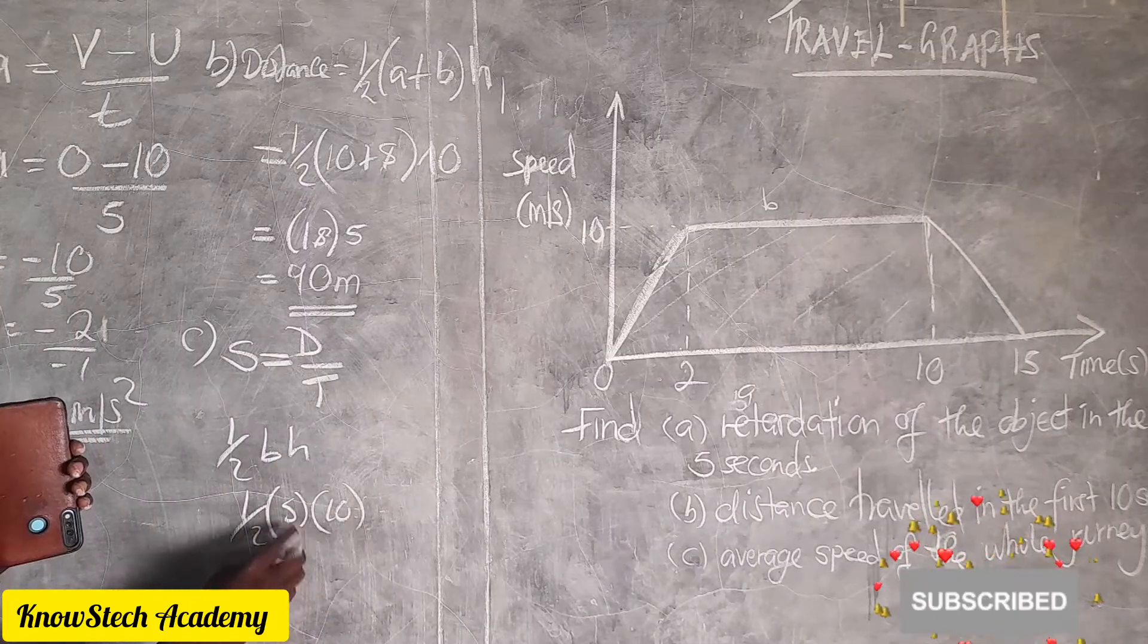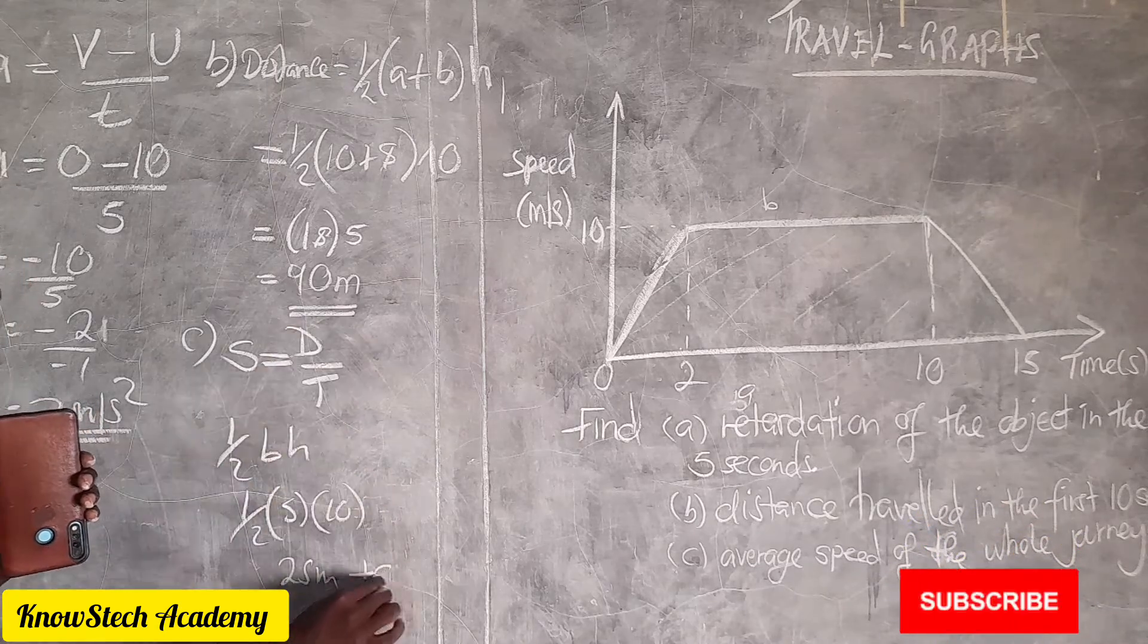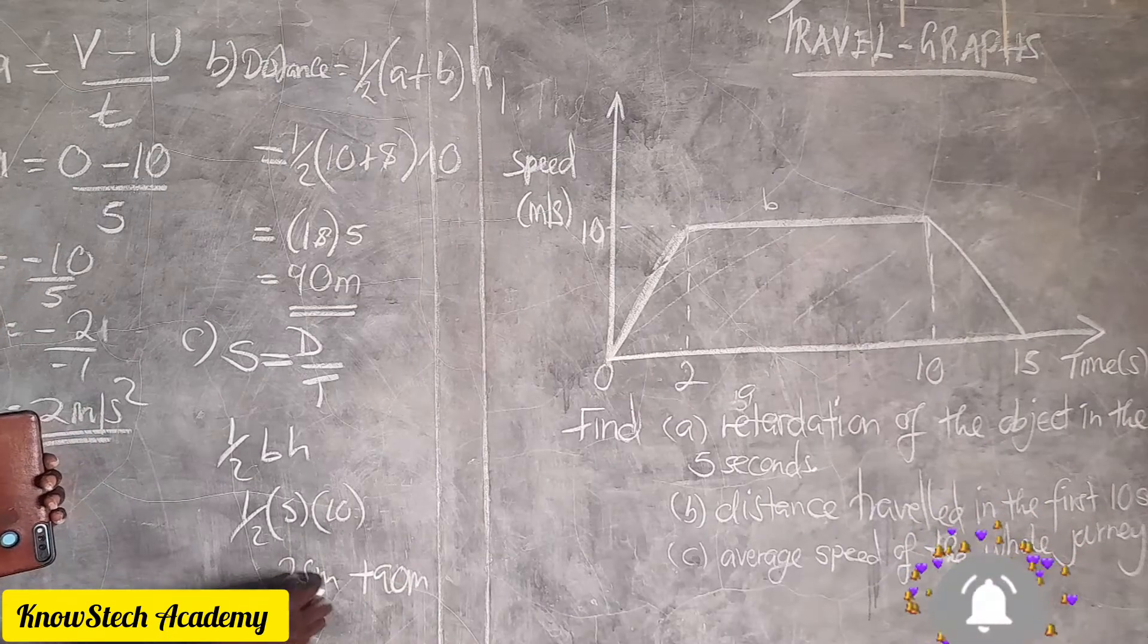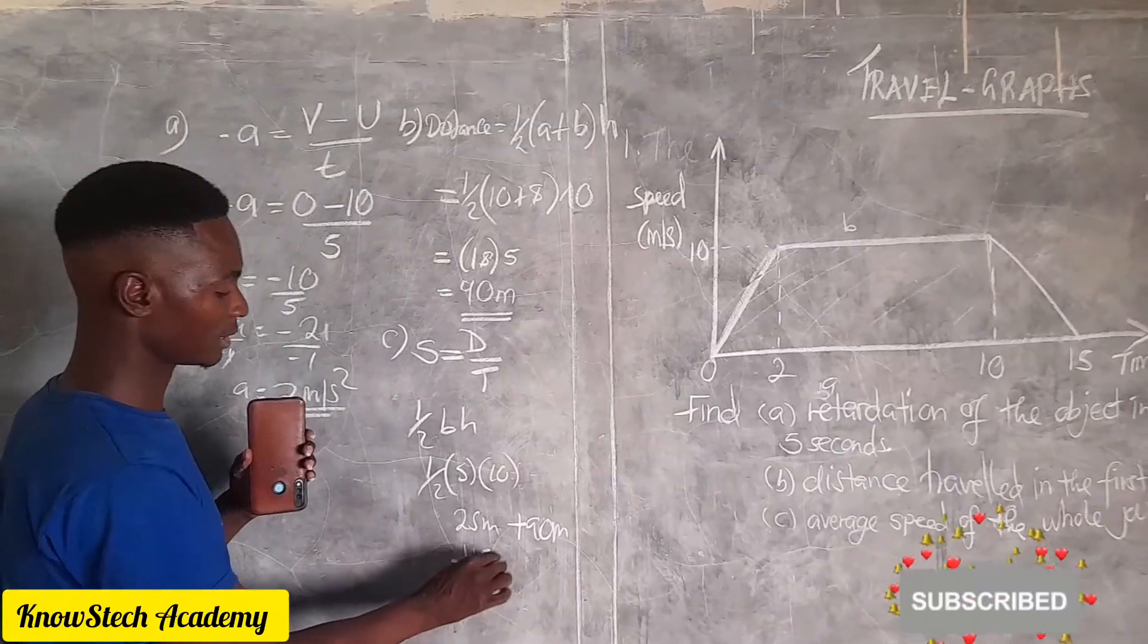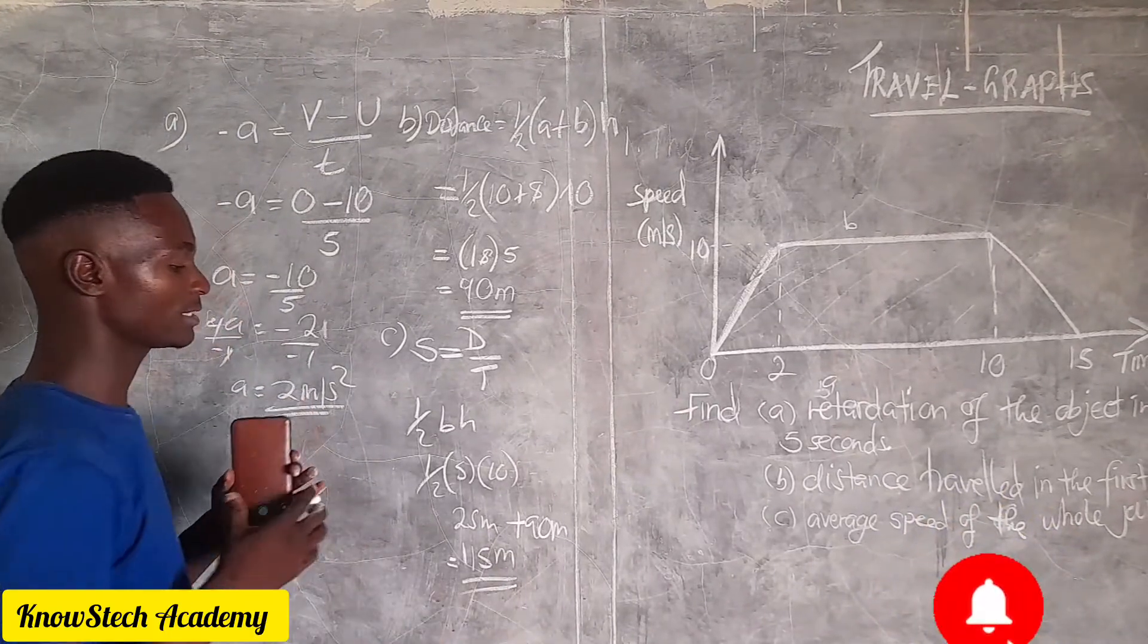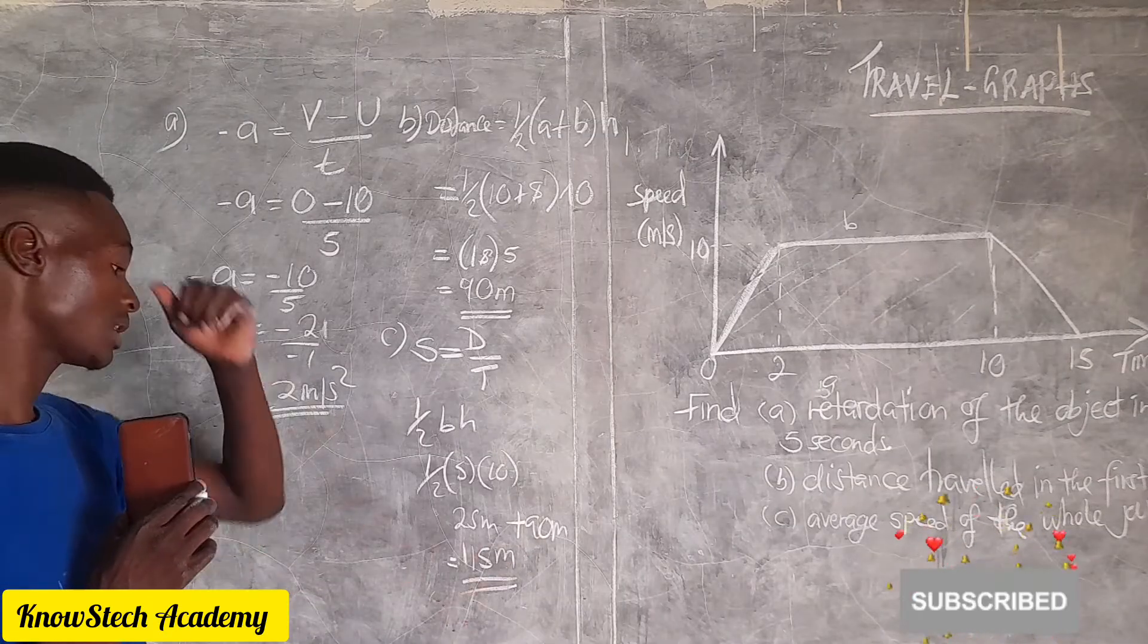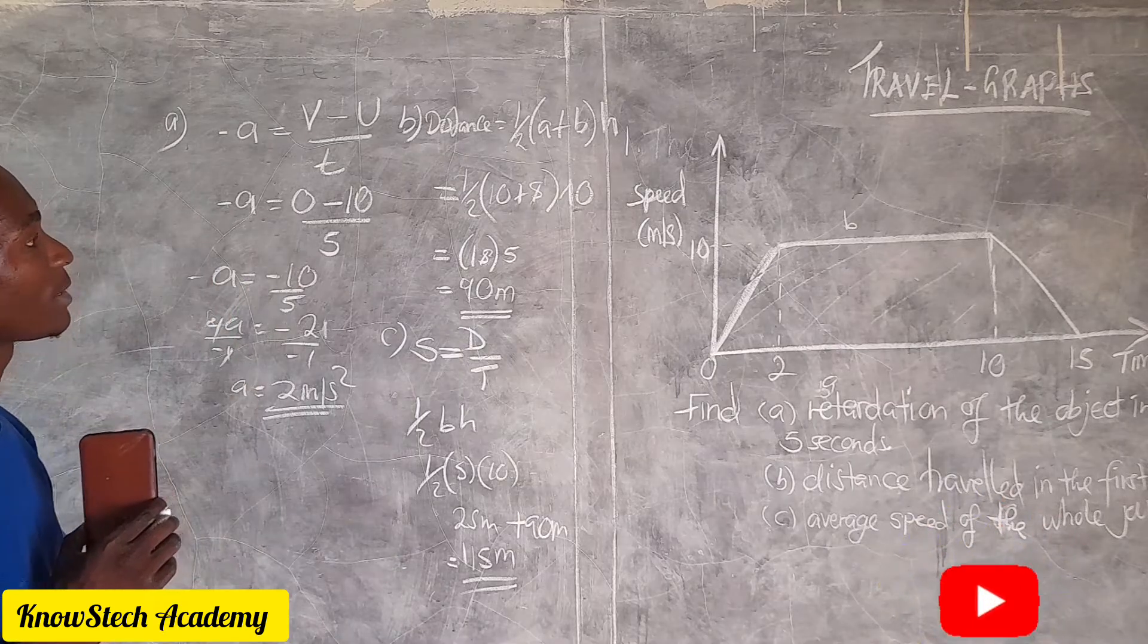Half b from 10 to 15 is 5, then height is 10. Half of 10 is 5, 5 times 5 is 25 meters. 25 meters plus 90 to come up with total distance. 25 plus 90, this is 115 meters. This is the total distance traveled by the object.